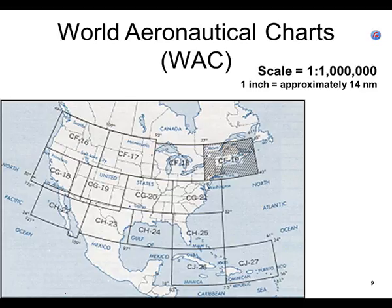That CF-19 label is telling you which chart number this scanned image came from. So that's what it would show on the front of the chart — so if you wanted to fly in Maine or Nova Scotia, you'd use that chart.